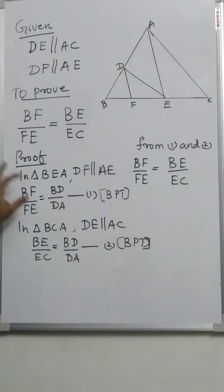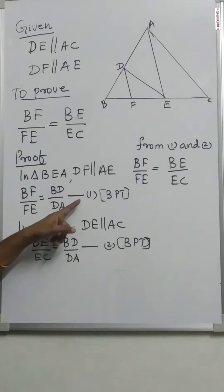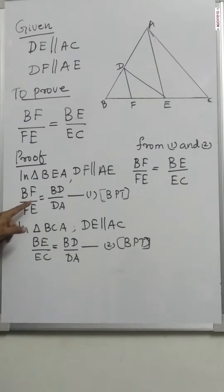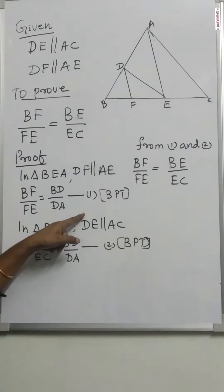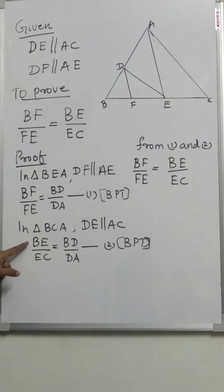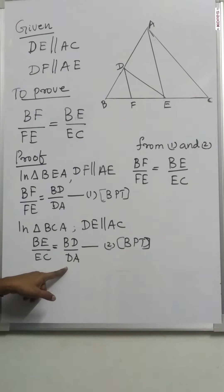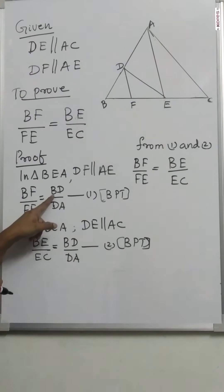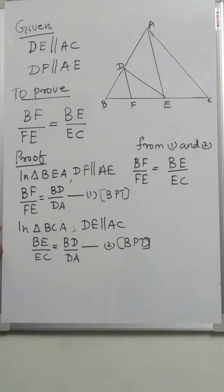From equation 1 and equation 2: BF by FE is equal to BD by DA (equation 1), and BE by EC is equal to BD by DA (equation 2). Since the right-hand sides are equal, the left-hand sides are also equal. Therefore, BF by FE is equal to BE by EC.